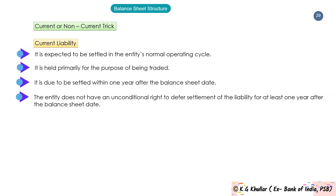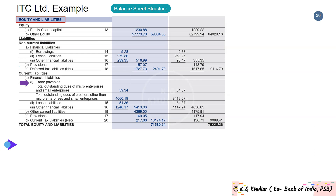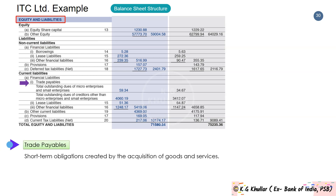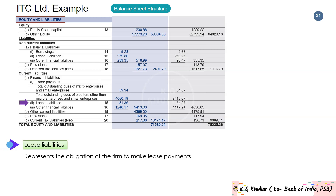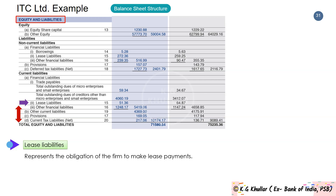Under current liabilities, Trade Payables include short-term obligations created by the acquisition of goods and services such as accounts payable, wages payable, and tax payable. Lease Liabilities represent the obligation of a firm to make lease payments. The remaining current liabilities are self-explanatory. The benefit of the vertical balance sheet format is that we can compare year-on-year performance — here, ITC Limited's performance for 2020 and 2021 is compared.